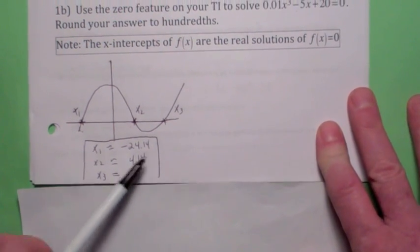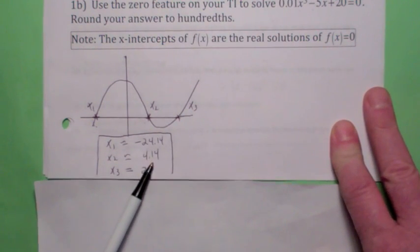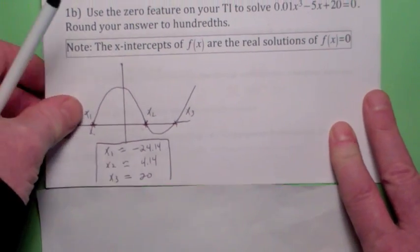Anyway, so the solutions to this equation equaling 0 are negative 24.14, 4.14, and 20, rounded to hundredths.